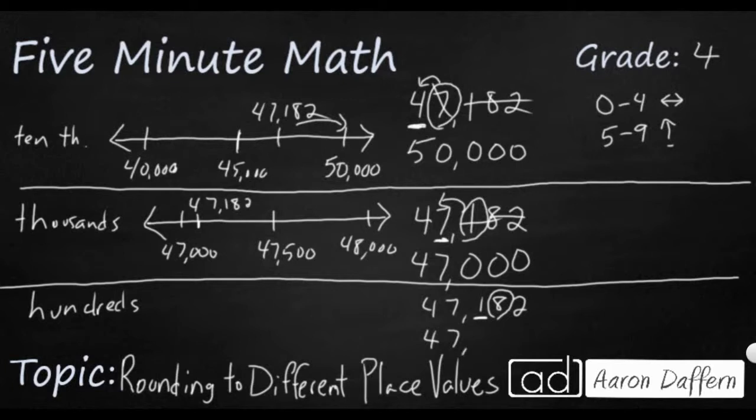So this 8 is definitely between 5 and 9, which means it's going to make this 1 bump up to a 2 before it becomes a 0, and anything after the circled number becomes a 0. So it looks like it's going to round to 47,200.